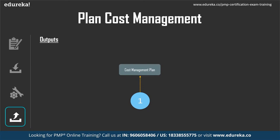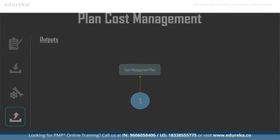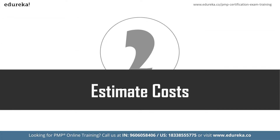The cost management plan is one of the subsidiary plans that gets consolidated into a bigger plan along with other subsidiary plans. These other subsidiary plans include the scope management plan, schedule management plan, and quality management plan. We have nine knowledge areas, meaning nine subsidiary plans, all consolidated in the integration management knowledge area into a full plan. The next process is estimate cost.